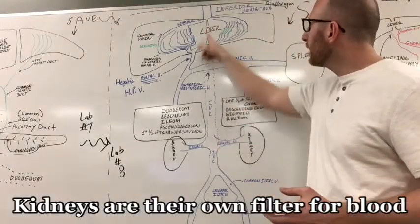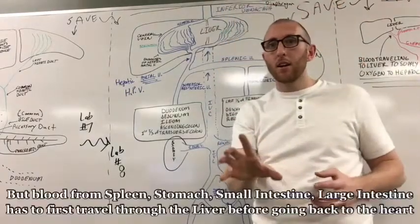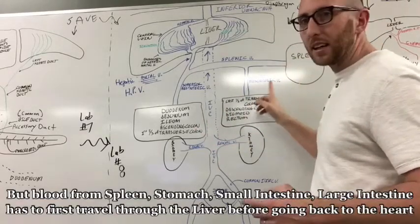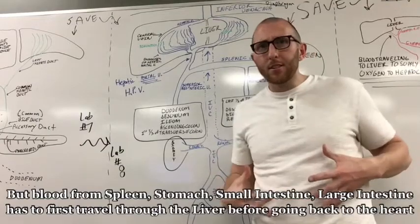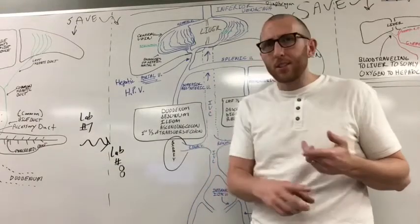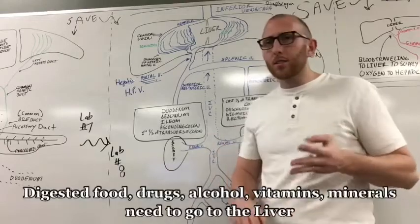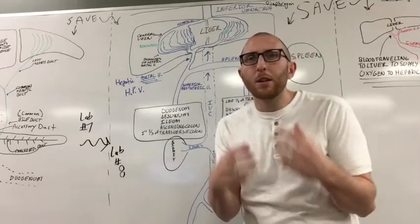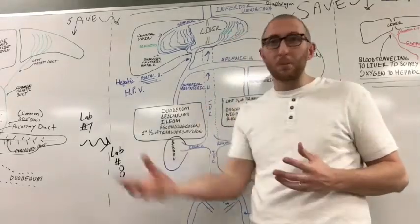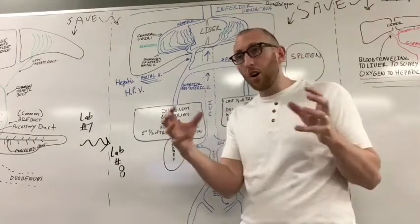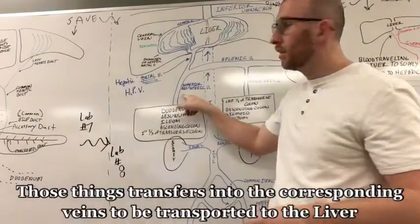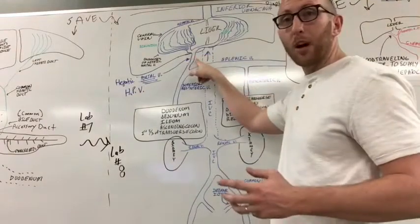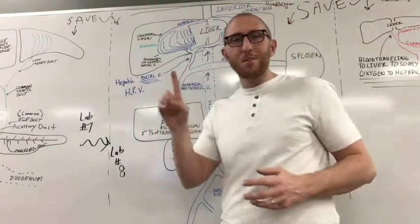And that's because that blood's already been filtered and it's good blood. So it can go straight up to the heart. But things that are coming from the small intestine, the large intestine, the spleen, the stomach, what do we have in those areas? We have food that just was digested, alcohol, drugs, we've got vitamins, we've got minerals, we've got all sorts of things that need to be filtered before that blood can go back to the heart. So that food, drugs, alcohol, vitamins, minerals need to go to the liver. It hops into these veins from the digestive system and works its way up to one very powerful vein.